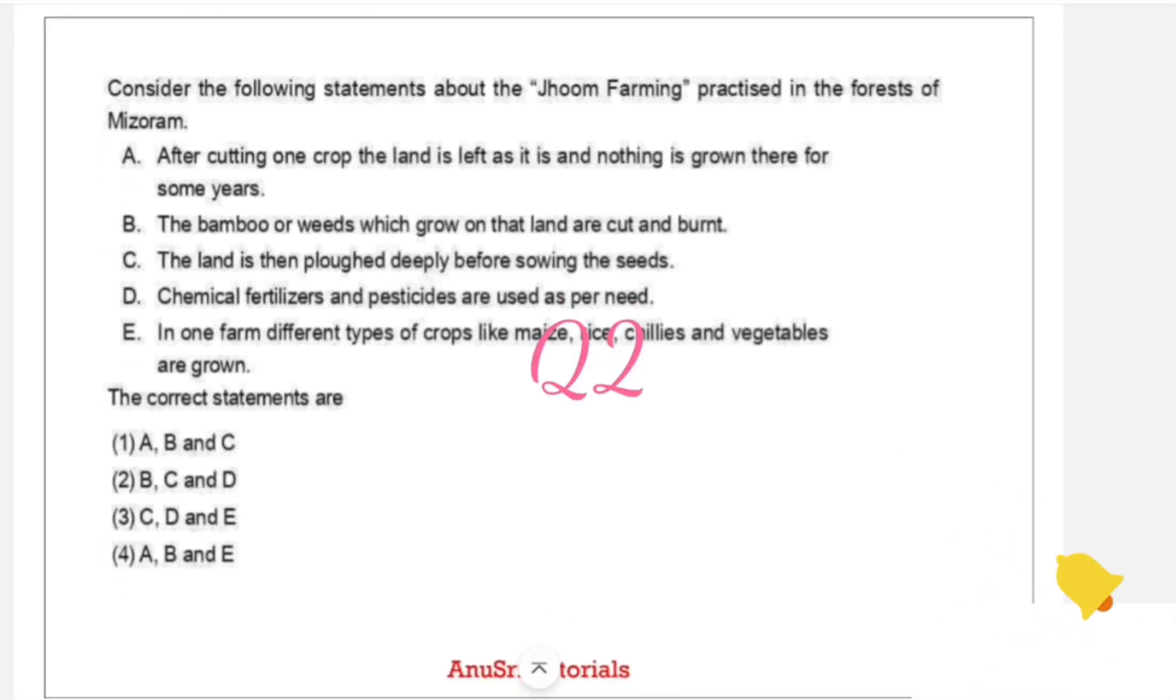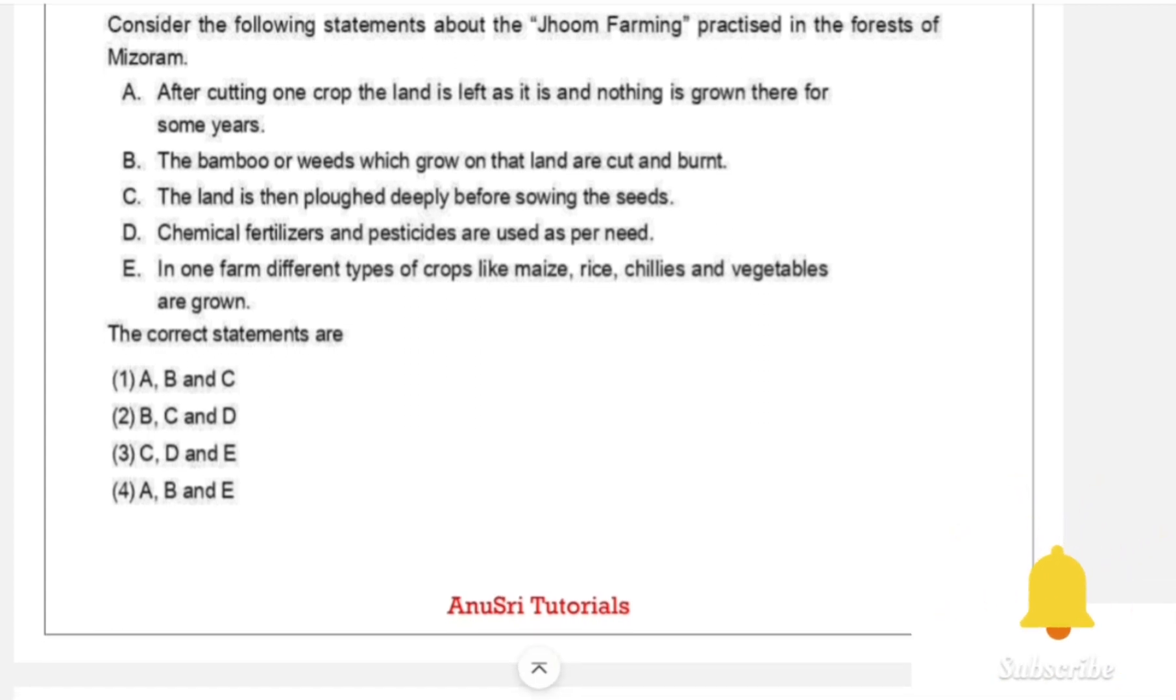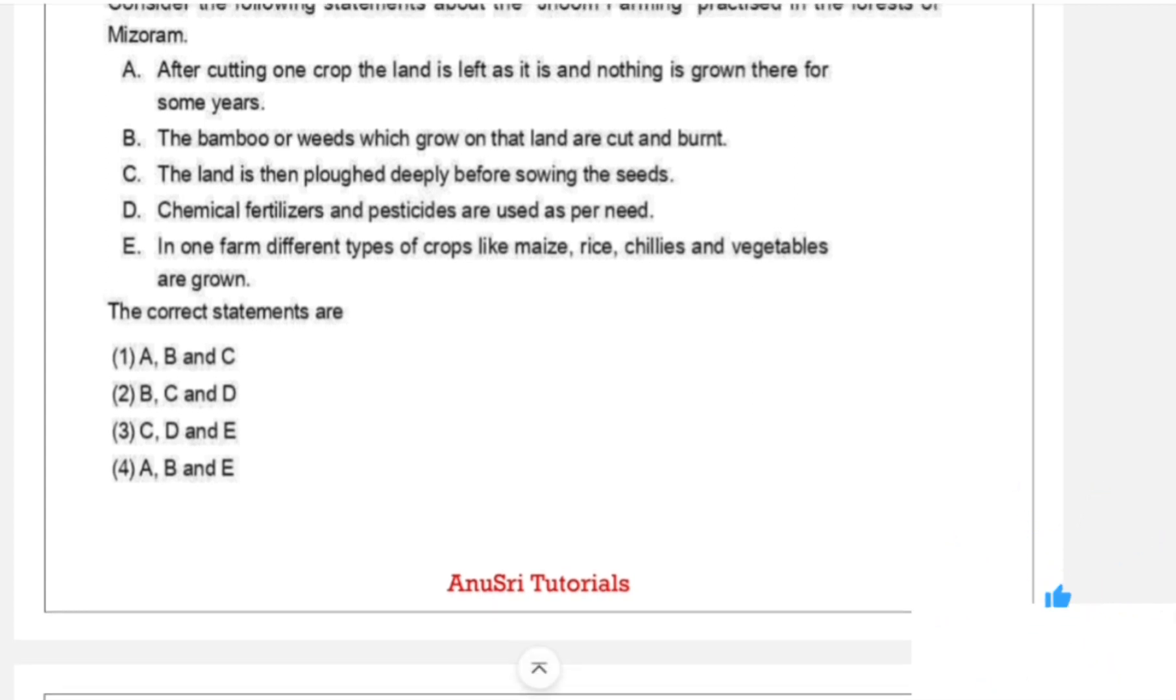Consider the following statements about the jhum farming practiced in the forests of Mizoram. After cutting, the land is left as it is and nothing is grown there for some years. Option B: The bamboo and weeds which grow on that land are cut and burned. Option C: The land is ploughed deeply before sowing the seeds. Option D: Chemical fertilizers and pesticides are used as per need.